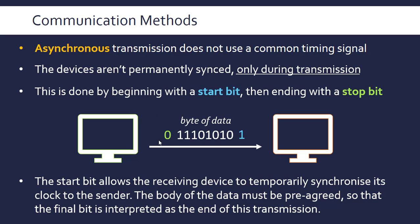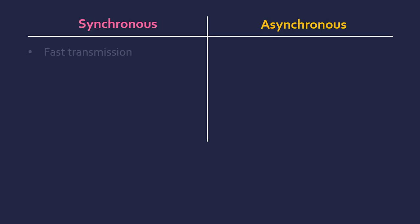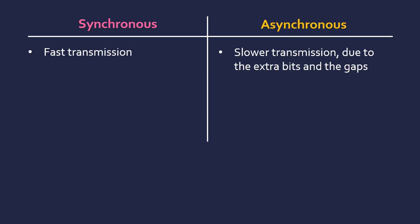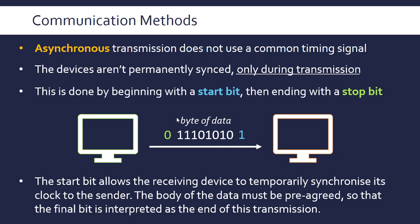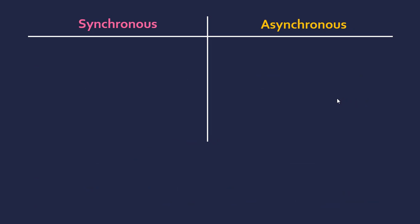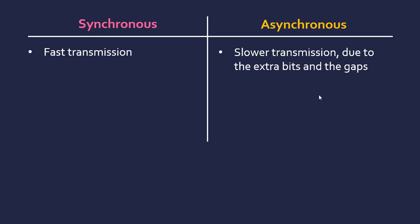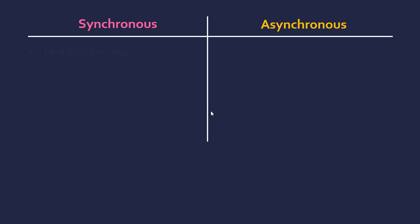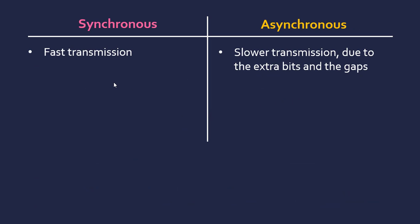Also important: a gap must be left between the stop bit and any next message, so the receiver doesn't interpret the next message as a continuation. Comparing the two: synchronous is usually faster than asynchronous, because asynchronous has extra overhead bits. When messages are very small — often just a byte — the start and stop bits represent a significant proportion, roughly a fifth of the overall message. The gap after the stop bit also adds to the slowdown, so synchronous is usually faster.